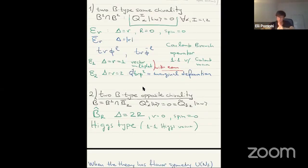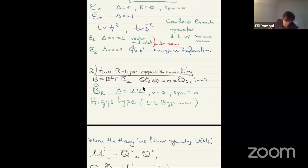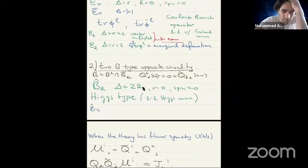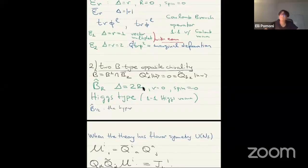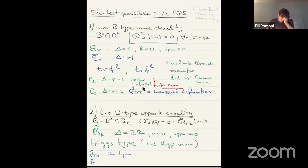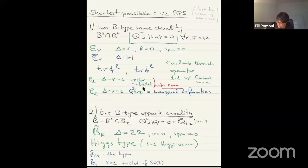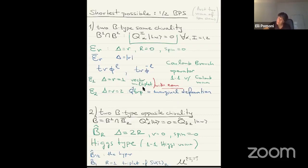Now the second way to do things: take two type-B conditions but of opposite chirality — for example, B1 and B-bar-2. When you do this, the resulting multiplet is called B-hat. The BPS condition you will derive has everything else zero. These operators are called Higgs type and are in one-to-one correspondence with Higgs vacua.